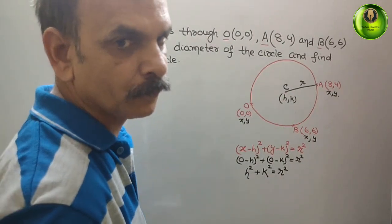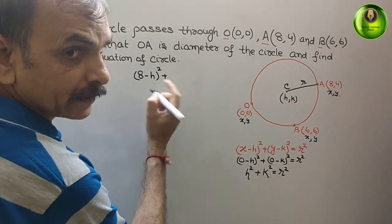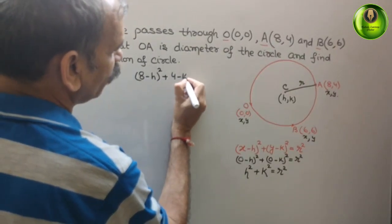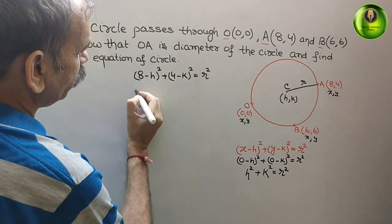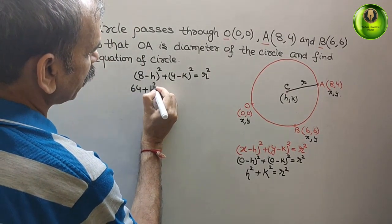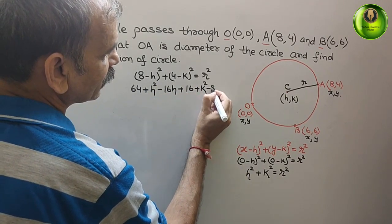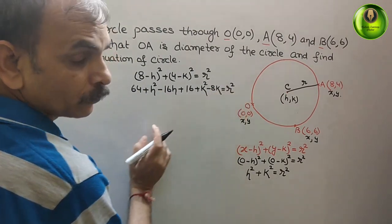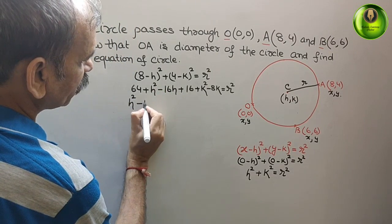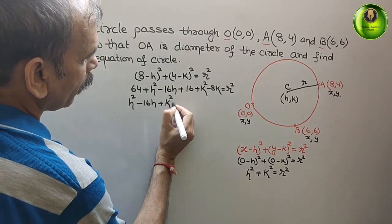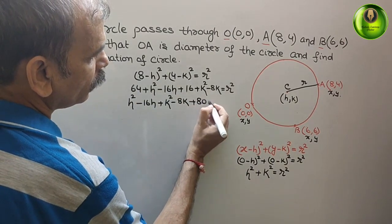Now we will go for point A. We get: (8 - H)² + (4 - K)² = R². Expanding: 64 + H² - 16H + 16 + K² - 8K = R². Arranging: H² - 16H + K² - 8K + 80 = R².